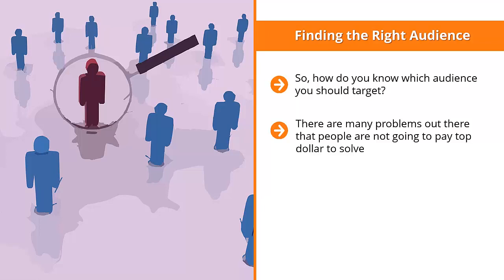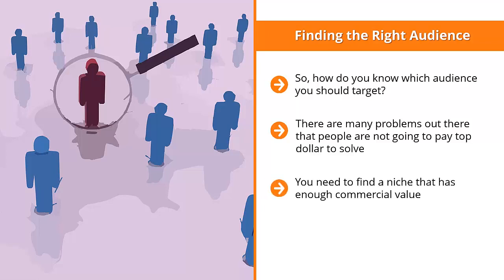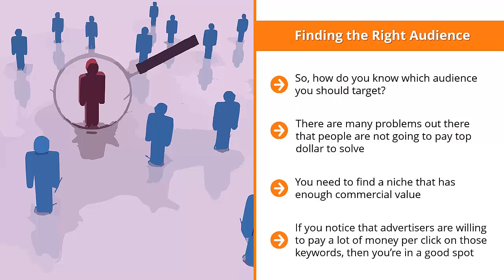People are looking for things like the right DVD set or headphones, but there is a limit to people's budgets. Different problems have different priorities. You need to find a niche that has enough commercial value. One way to estimate this is to use Google AdWords Keyword Planner and do cost-per-click research on keywords related to your niche. If advertisers are willing to pay a lot of money per click on those keywords, then you are in a good spot.